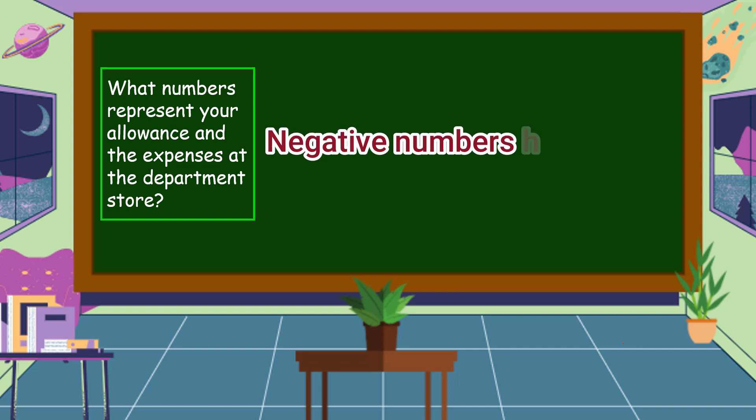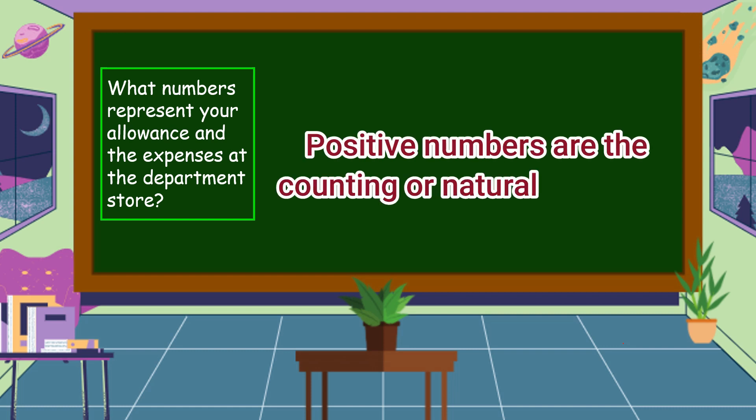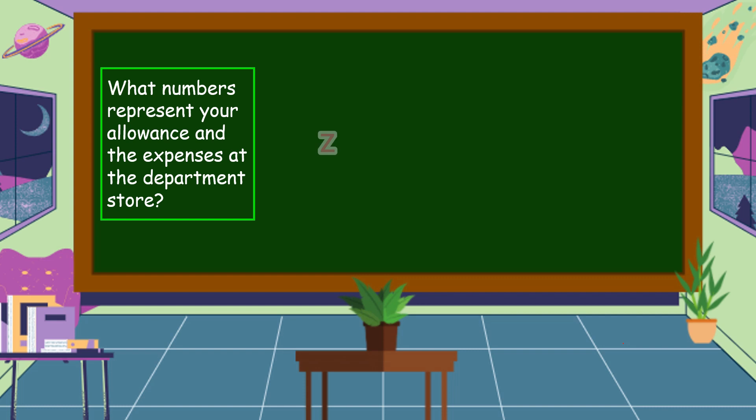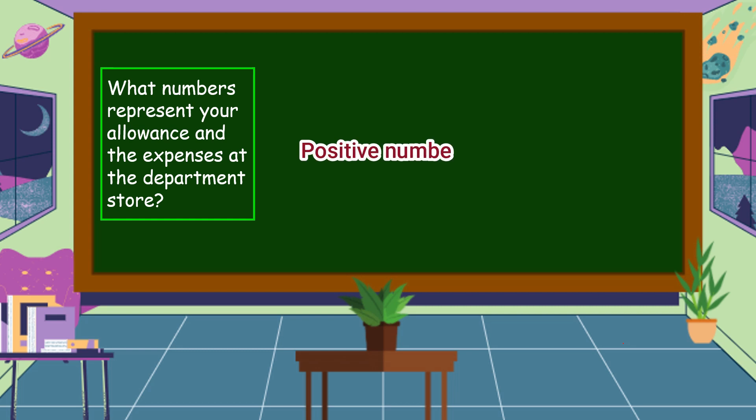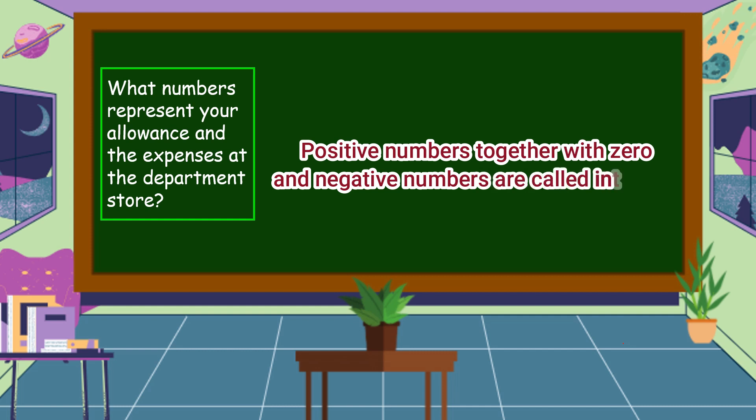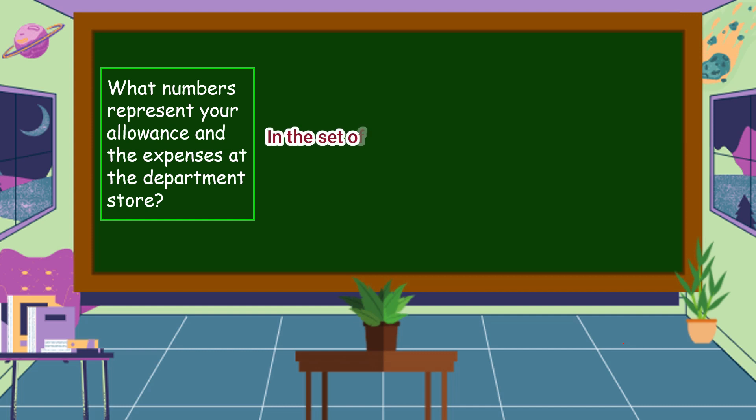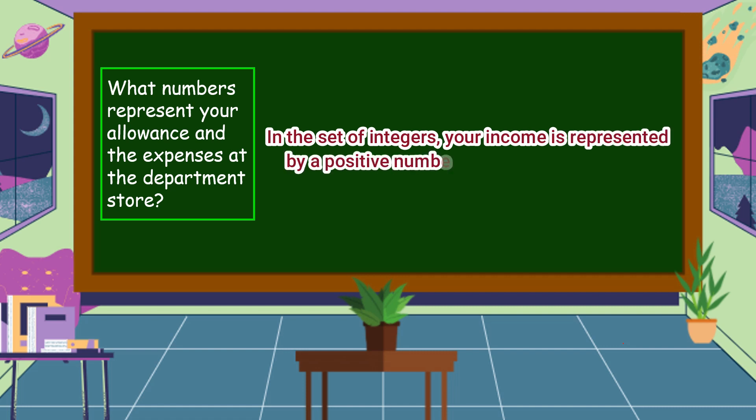Negative numbers have values less than zero. Positive numbers are the counting or natural numbers. Zero and positive numbers make up the set of whole numbers. Positive numbers, together with zero and negative numbers, are called integers. In the set of integers, your income is represented by a positive number, while the expenses are represented by negative numbers.